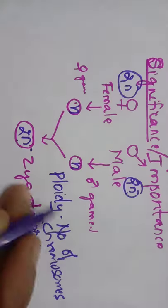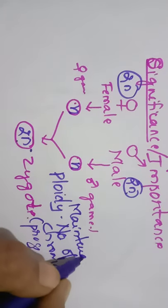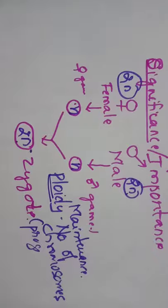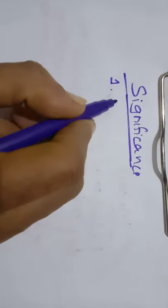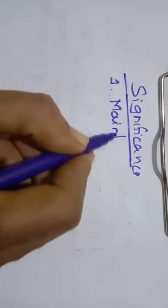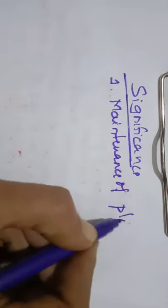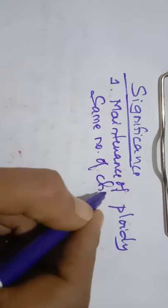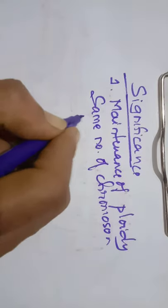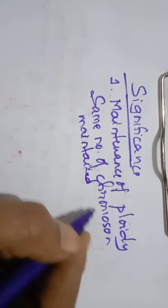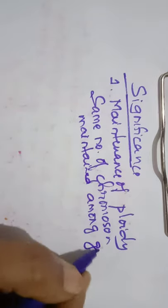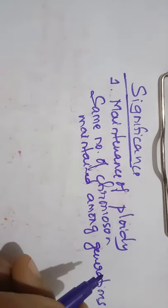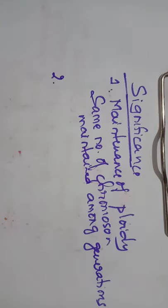The most significant aspect of meiosis is the maintenance of ploidy. Because of meiosis, the same number of chromosomes is maintained among generations. For example, if your mother is carrying 2n chromosomes, you are also carrying 2n, and your daughter is also carrying 2n. This is the first important significance of meiosis: maintenance of ploidy.